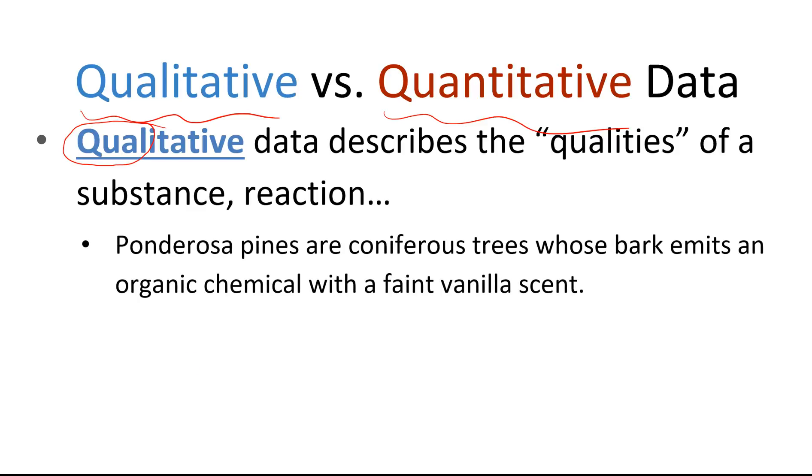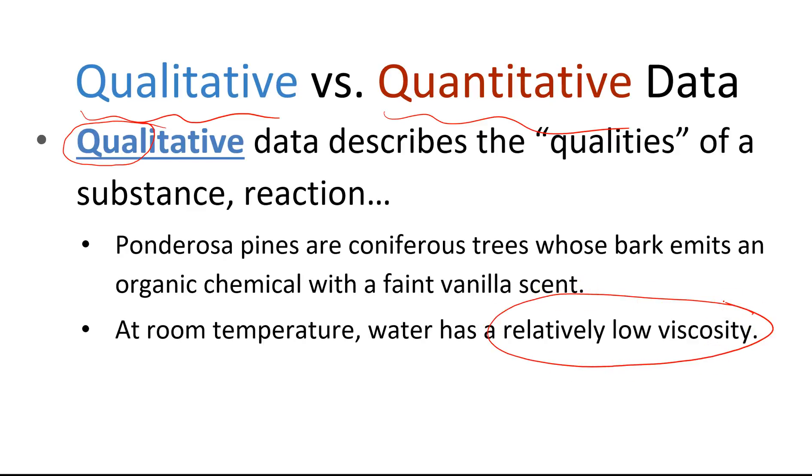So for example, ponderosa pines, they are coniferous trees whose bark emits an organic chemical with a faint vanilla scent. That's some good information about ponderosa pines, but it's not a number, it's not a direct measurement. At room temperature, water has a relatively low viscosity, so that's describing a property of water. But it's not a measurement, it's not an actual temperature, it's not an actual volume. So kind of the key indicator in qualitative data is no numbers or units. We're not including numbers and units in our qualitative data.